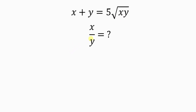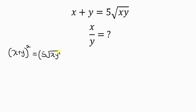Let's find the values of x over y, given that x plus y is equal to 5 times the square root of xy. Our first step will be to get rid of this square root by squaring both sides. Squaring the left hand side, we have x squared plus 2 times x times y.